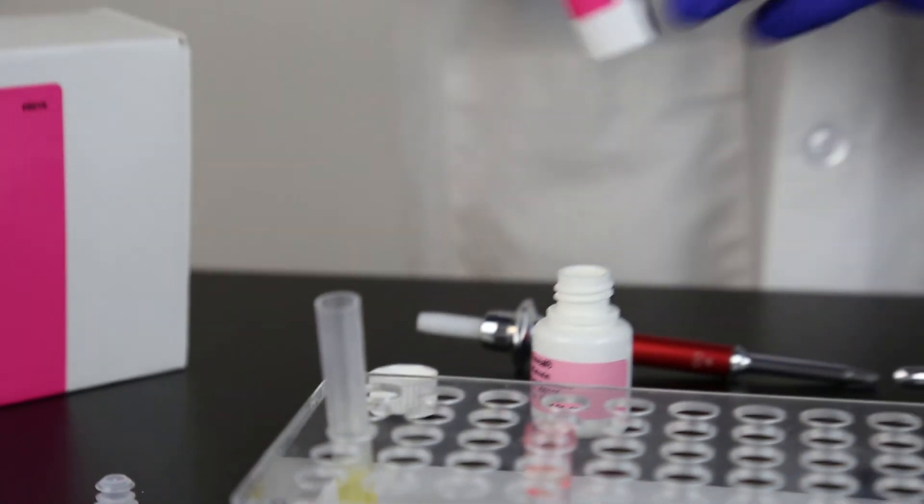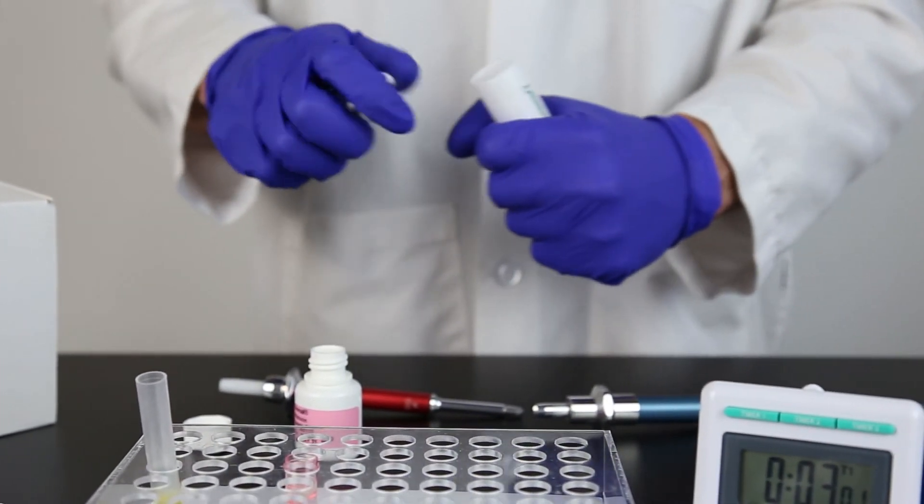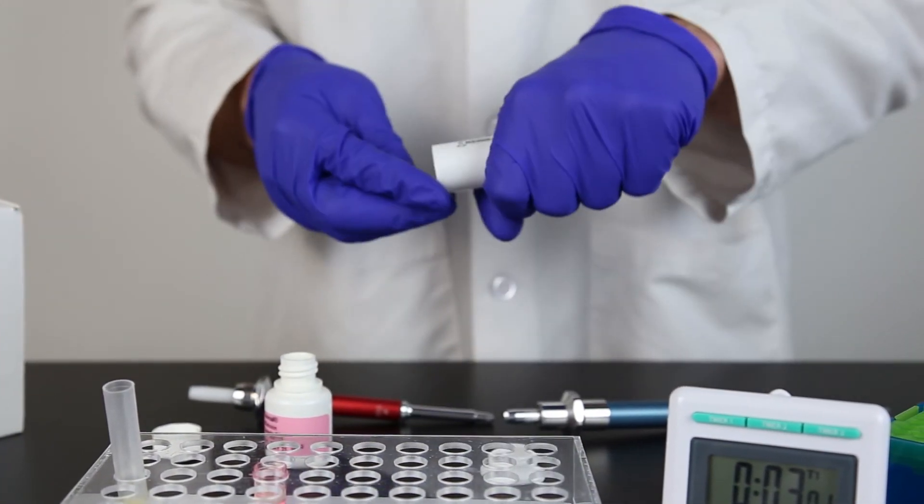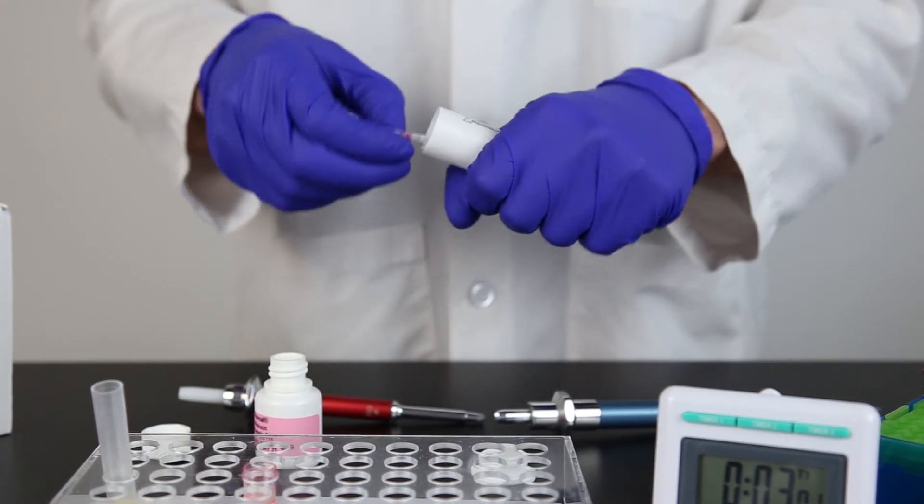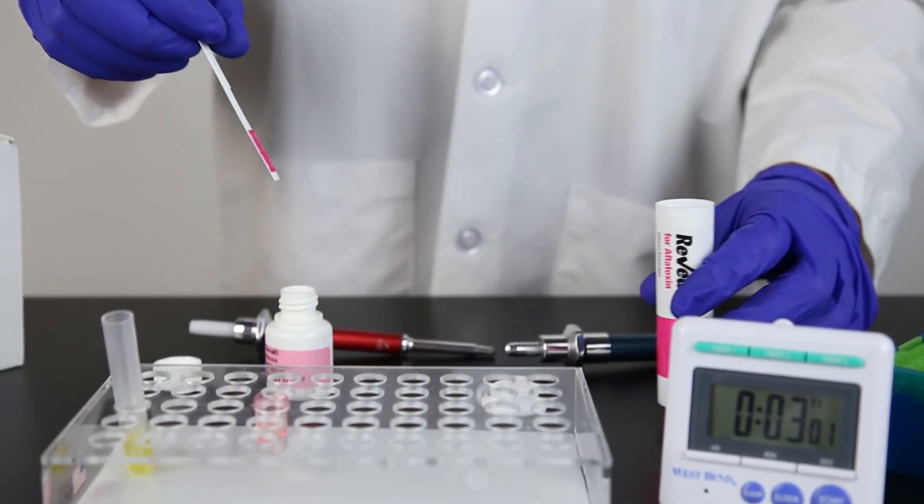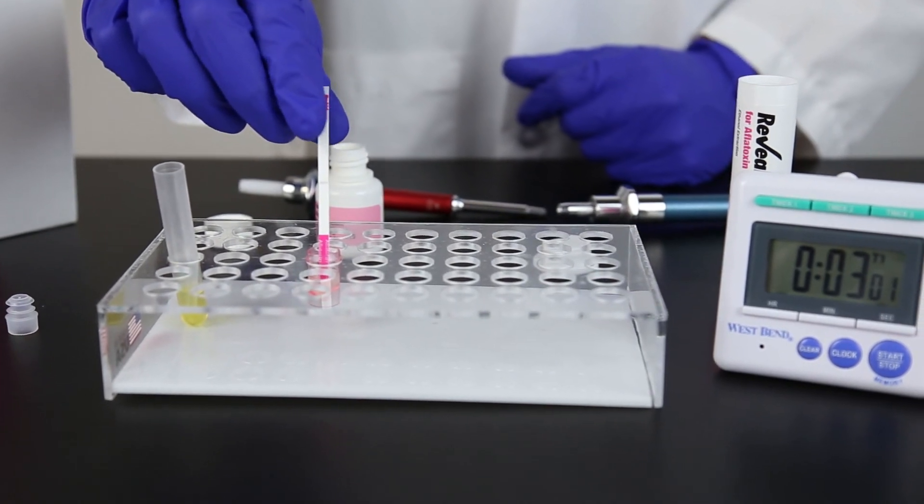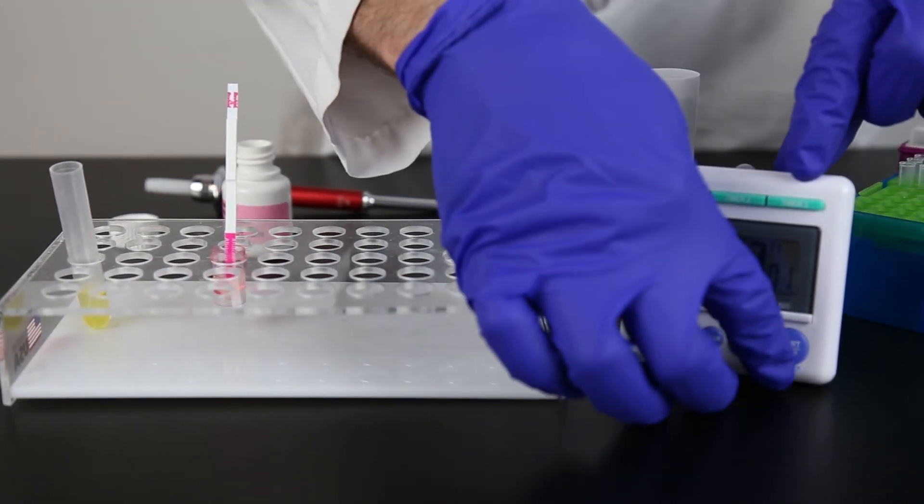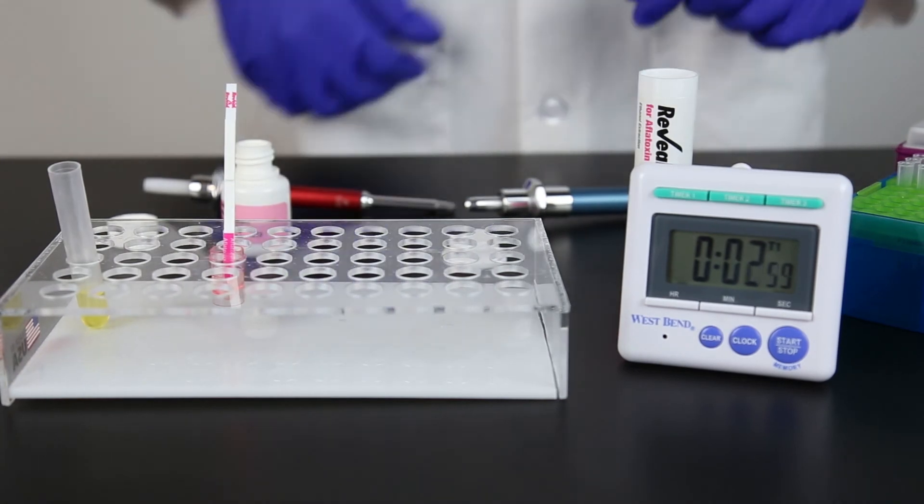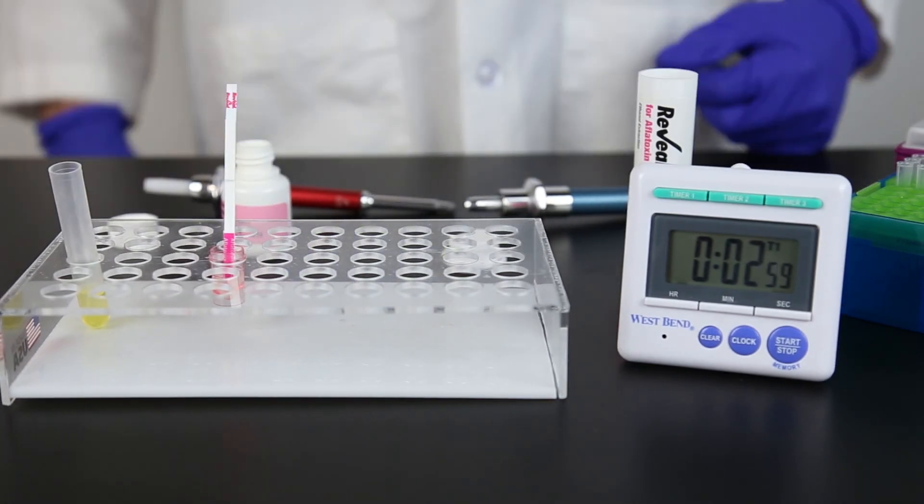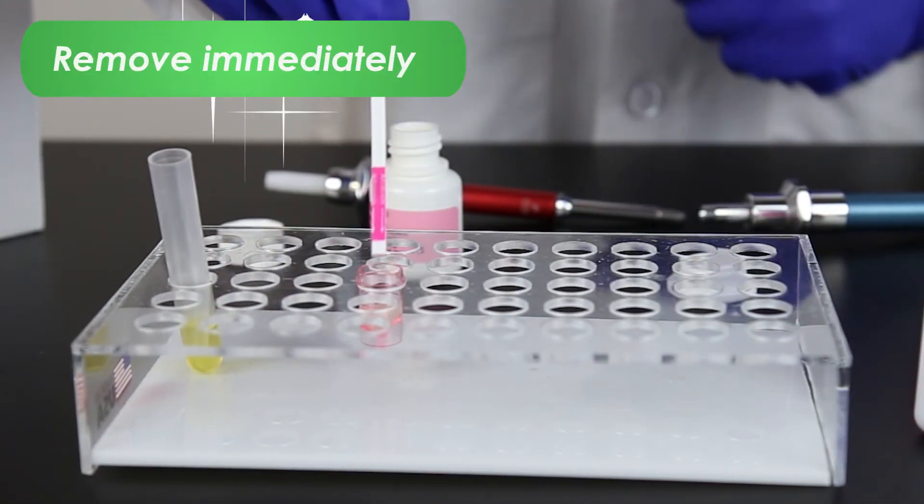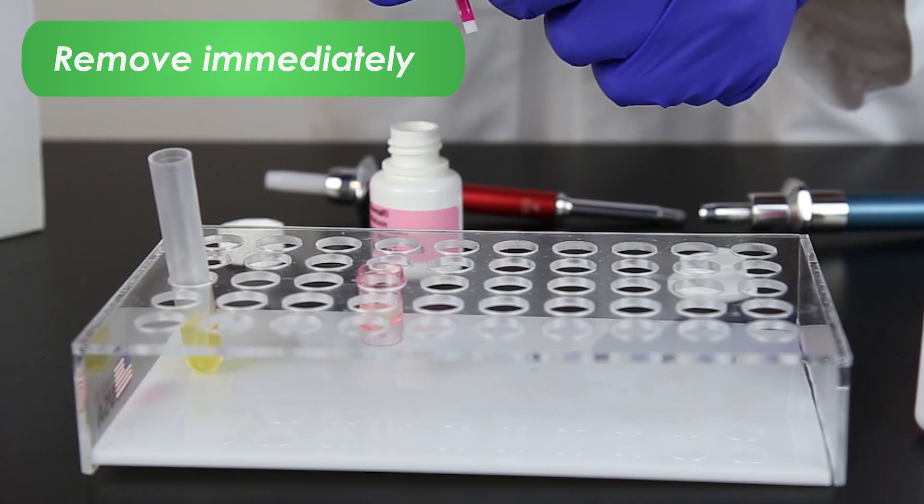Place a Reveal for Aflatoxin test strip into each sample cup with the sample end down. Allow the strip to develop in the sample cup for three minutes. Remove the strip from the cup immediately after completion of the three minute incubation.